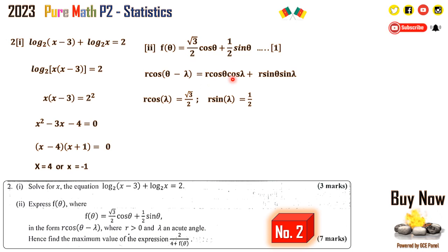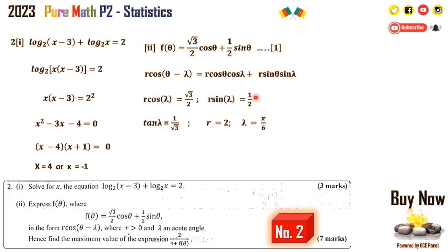These two equations are the same, which means r·cos lambda equals root 3 over 2 and r·sin lambda equals a half. To find tan lambda we divide: r·sin lambda over r·cos lambda, so a half divided by root 3 over 2 gives tan lambda equals 1 over root 3. For r, we compute the square root of (root 3 over 2) squared plus (a half) squared, which gives the square root of 1, equaling 1 — wait, that gives the square root of 4 over 4 plus 1 over 4, so r equals 1.